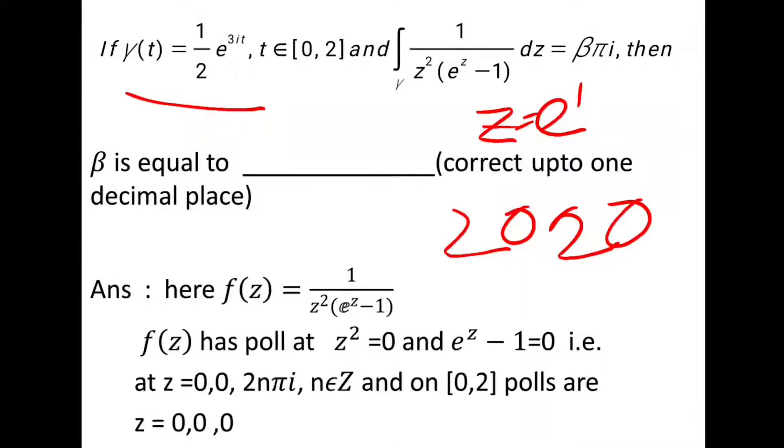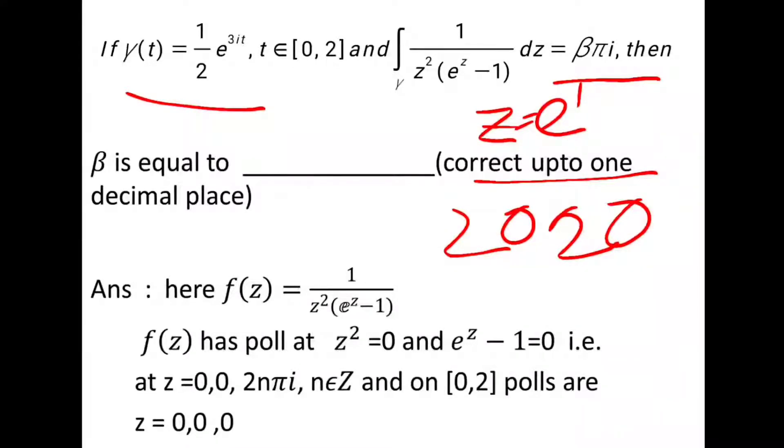We have γ(t) = (1/2)e^(3it), t ∈ [0,2], and then find the integration β/(πi). Then β is correct up to one decimal place. Here we take f(z) = 1/(z²(e^z - 1)).